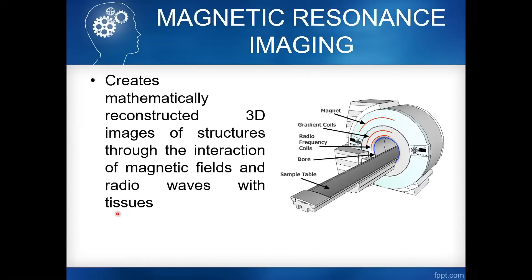So yun po yung purpose ng gradient coil — to localize the MRI signal or produce slices. Next is the RF coil. Ito guys yung source ng radiofrequency — yung nag-supply. Dalawa kasi yan: may transmitter tsaka receiver. May mga coil na transmitter lang, may mga coil na receiver lang, meron naman pong coil na both transmitter and receiver.